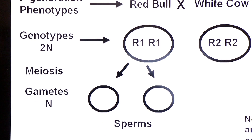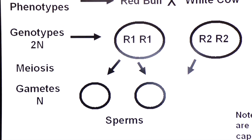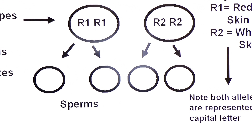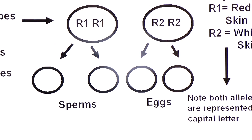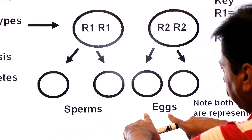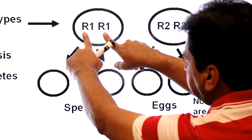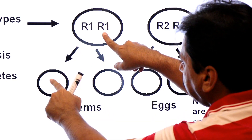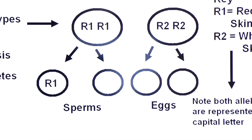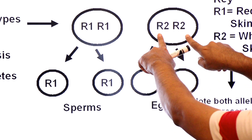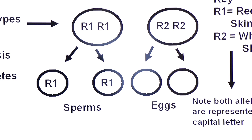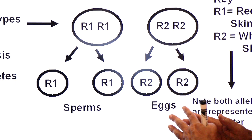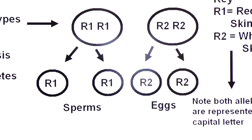अब हम gametes draw करेंगे meiosis के ज़रिये। Meiosis reduces diploid number into haploid number. Red bull is male so it produces two male gametes — sperms — by spermatogenesis; white cow is female and produces eggs by oogenesis. Capital R1 goes to one sperm and capital R1 goes to another sperm. Capital R2 goes to one egg and capital R2 goes to another egg। Alleles segregate हो चुके हैं sperms और eggs में।